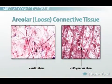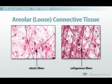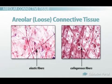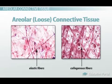Therefore, the appearance of areolar connective tissue varies depending on where it is found. On the slide shown here, note that the image on the left has a lot of elastic fibers in the tissue. The image on the right has many more collagenous fibers, but they are both areolar connective tissue.